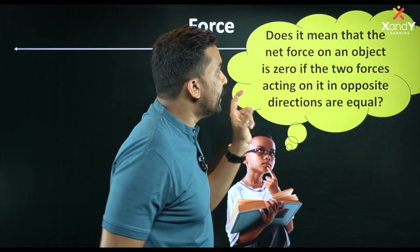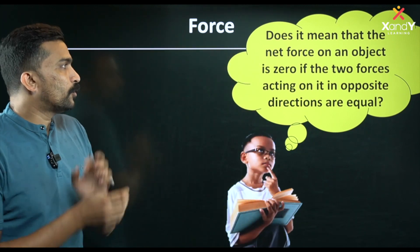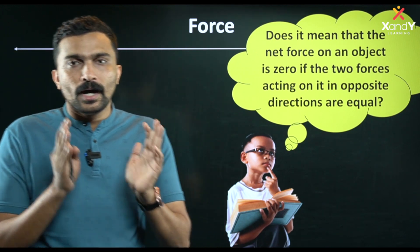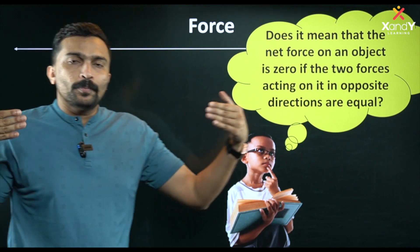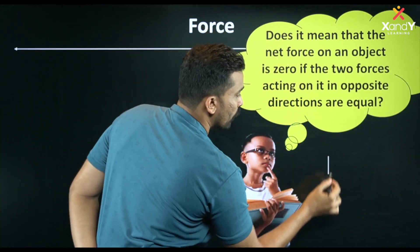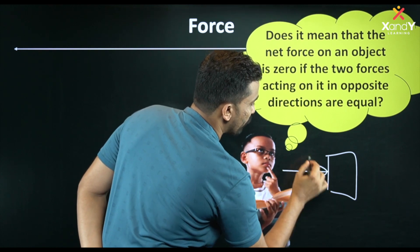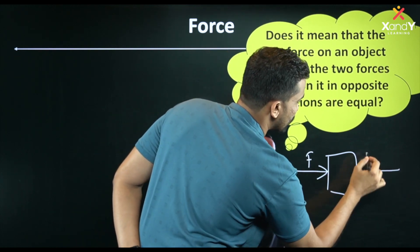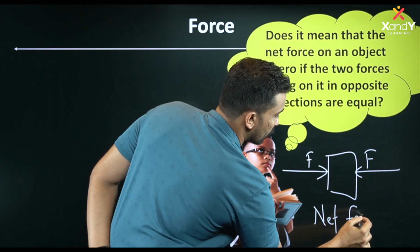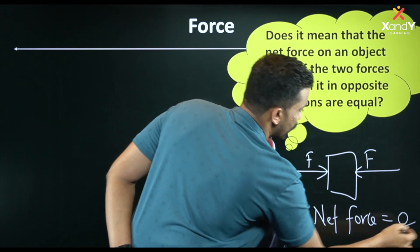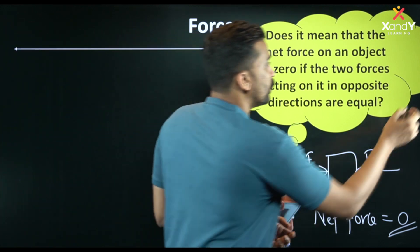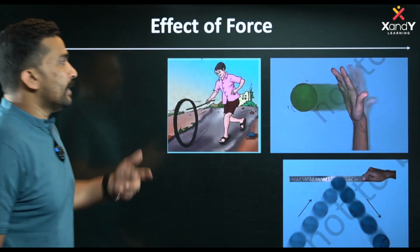Does it mean that the net force on an object is zero if two forces acting on it in opposite directions are equal? Yes. If two equal forces act in opposite directions, the net force in this case is zero, and the box will not move.